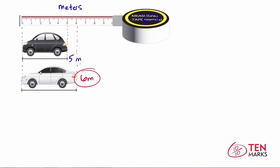Six meters is one meter longer than five meters. So the white car is one meter longer than the black car.